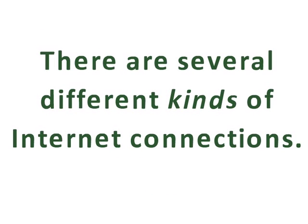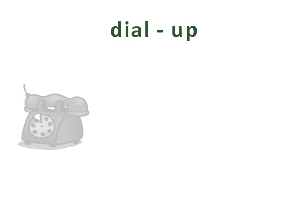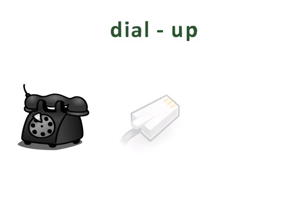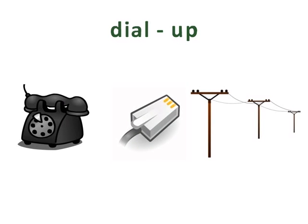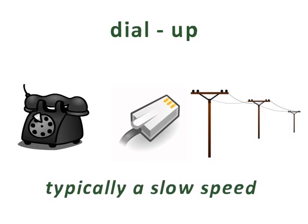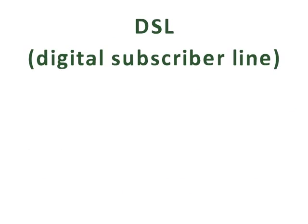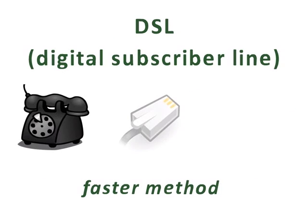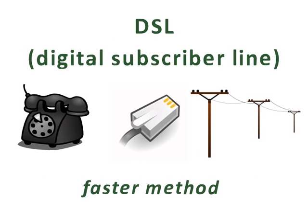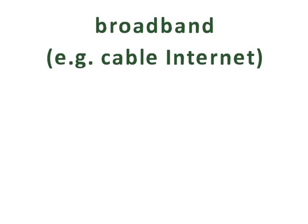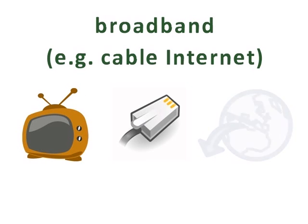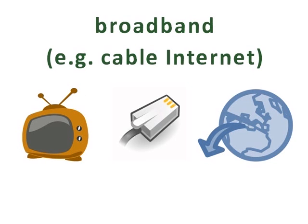There are several different kinds of Internet connections. A dial-up Internet connection uses a traditional phone line to dial onto the Internet. This is typically a slow connection speed. DSL Internet uses a faster connection method, but it is still connecting through a phone line. Broadband connections, such as cable Internet, offer faster Internet access and are typically known as high-speed Internet.